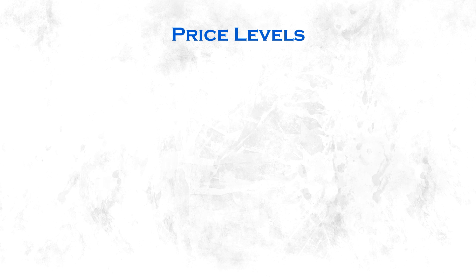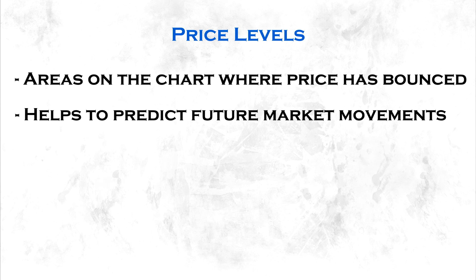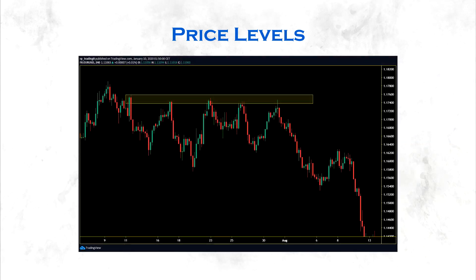Next thing I want to talk about is price levels. Price levels are essentially the areas that price interacts with on the chart — specifically the areas where price has bounced off in the past. With this knowledge, we try to predict the future price movements of the market. I like to highlight these areas with a box or a horizontal line. As you can see, whenever price came into that area, it got rejected and bounced several times in a row. Levels like that help us make trading decisions. We are going to dive deeper into this topic in another lesson.